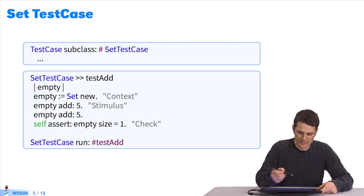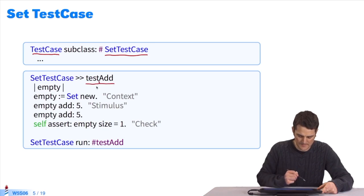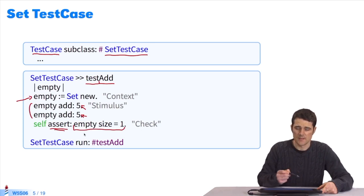Here's an example. To write a test, I have to write a TestCase subclass. I'll call this one SetTestCase. It's to test the sets. I define the method TestAdd. All the methods begin with Test. Then I set up the context. I create an instance of the Set class, which is empty. I add two elements, the same element twice. I try and add the same element twice, so 5 twice. Then I test it. I use Assert to do this, where I check that the size of my set is one, that I've succeeded in only adding the element once.